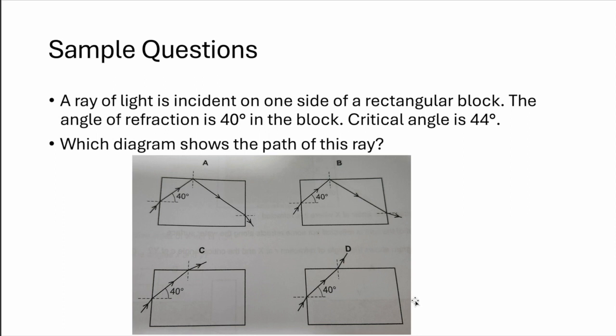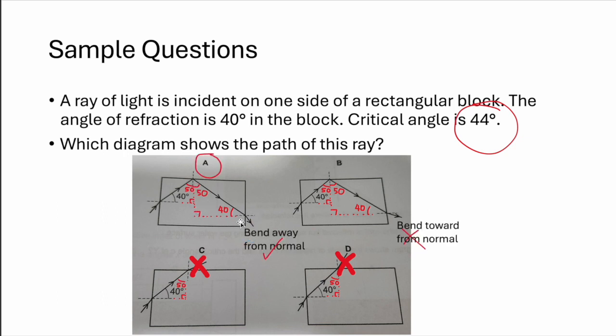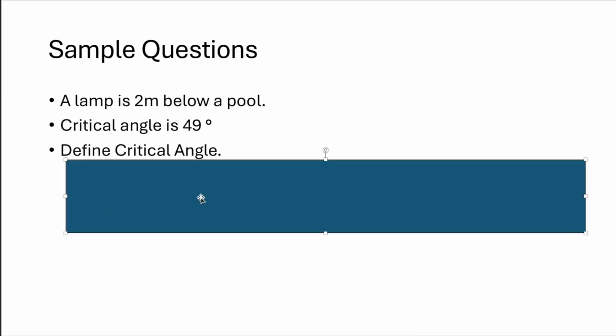A ray of light on one side of the rectangular block, the angle is 40. The angle of refraction is 40. Critical angle is 44. So which diagram shows the path of this ray? So it will be this because if you use basic trigonometry, this will be 50 degrees because they should be adding up to 90. Triangle adds up to one, angles in triangle add up to 180. So it's bigger than your 44. Totally internally reflected. And if this is 50, this is 40. Then it is not totally internally reflected. Therefore, it will escape as a refracted ray.